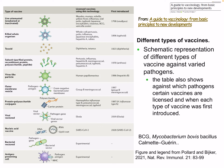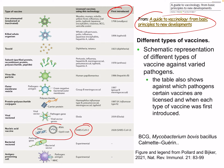Here's another figure from the Guide to Vaccinology showing a schematic representation of different vaccine types against varied pathogens, with the table showing which pathogens certain vaccines are licensed against and when each type was first introduced. We can see the new RNA vaccines here, and experimental ones such as bacterial vector vaccines that are still coming up.